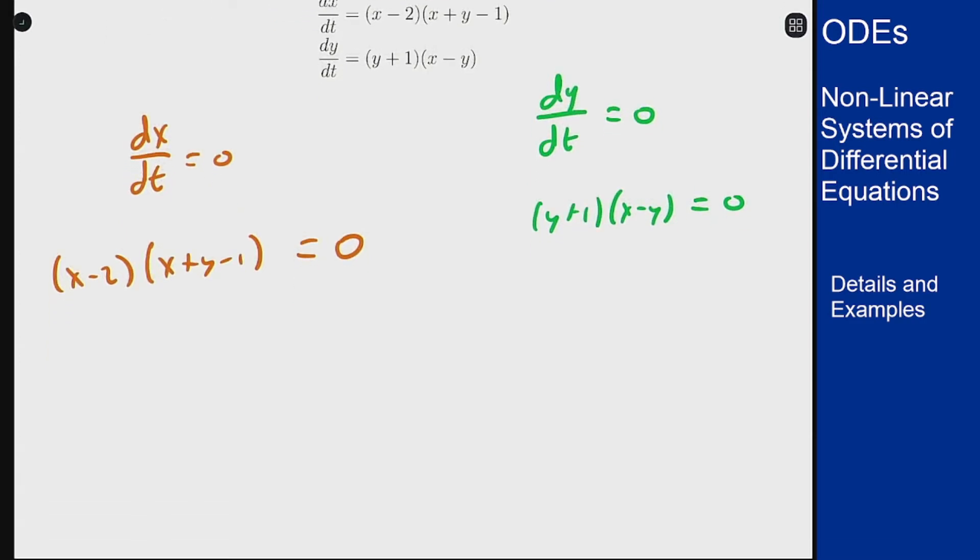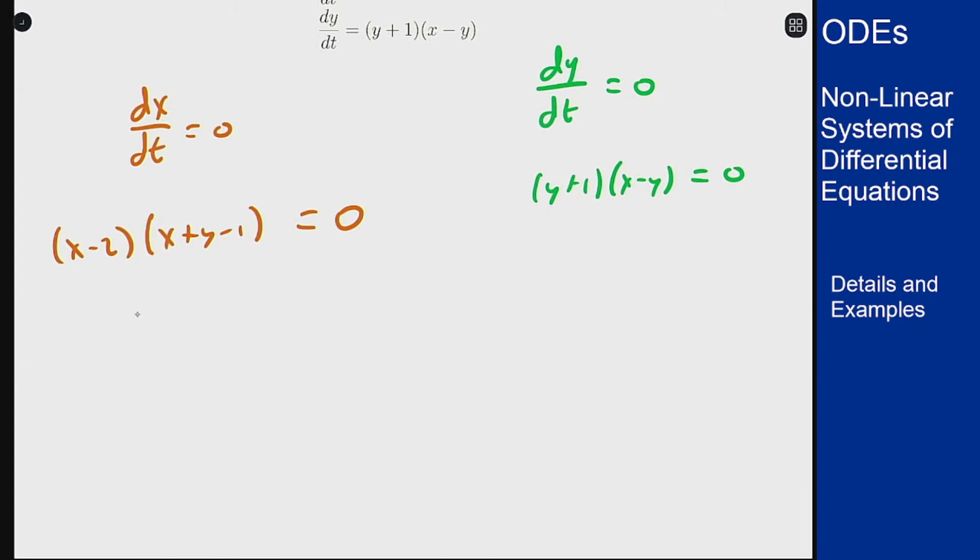So in the first equation we see that we have two factors here so we can split these two things up into either x equals 2 so that x minus 2 equals zero or x plus y minus 1 equals zero which we'll leave like that for now.